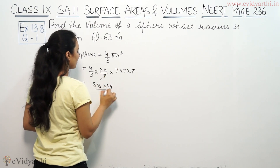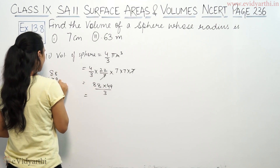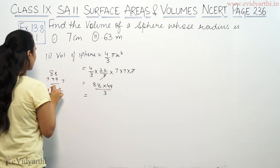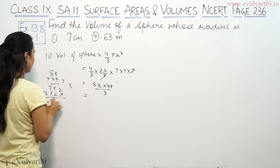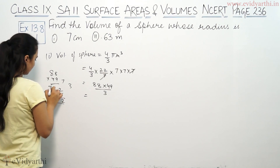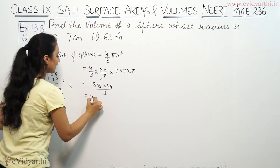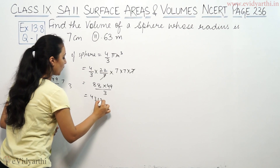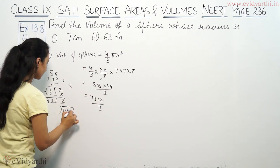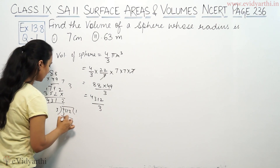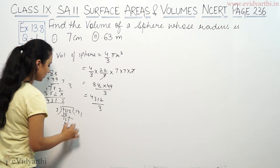7 by 7 gives us 49 divided by 3. So 88 into 49 — let's compute: 88 into 49. We get 72, 72 plus 7 is 79, then 32, 32 plus 3 is 35, giving us 4312 divided by 3. Now we divide.